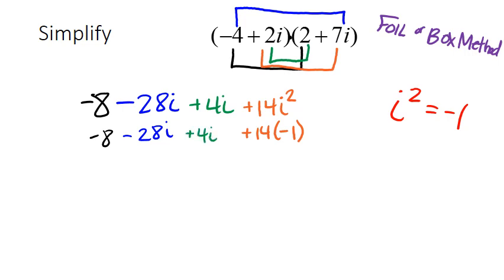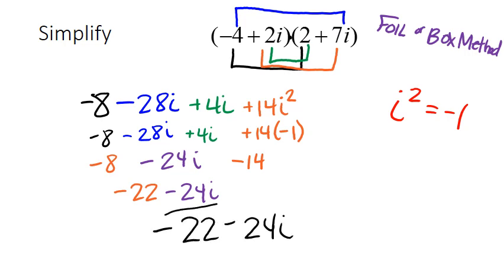Now we have to remember off to the side that i squared equals negative 1. So that means that that i squared is now times negative 1. They're written next to each other, so that means multiply. I now need to take a look at what I want to simplify first. I'm going to take care of the 14 times negative 1 to get negative 14. I'm also going to take care of the middle-like terms of negative 28 plus 4, which gives me negative 24i. I can then combine my other like terms on the outside. Negative 8 minus 14, which gives me a negative 22. Bring down my negative 24i. And I've now combined all like terms and I have a complex number. Standard form says real part followed by imaginary. So that is my final solution.